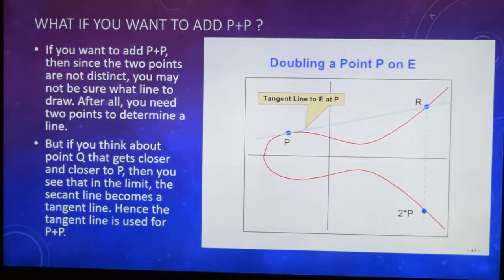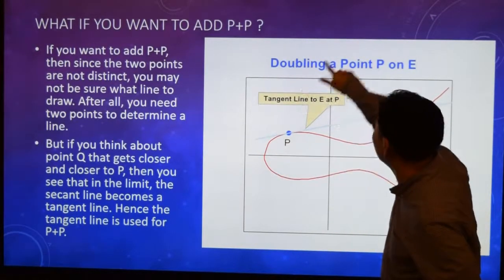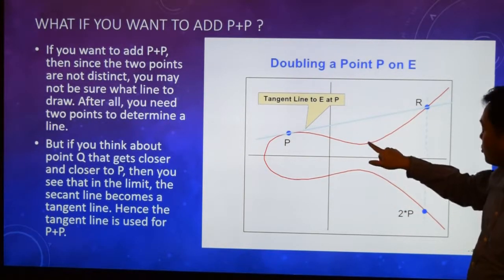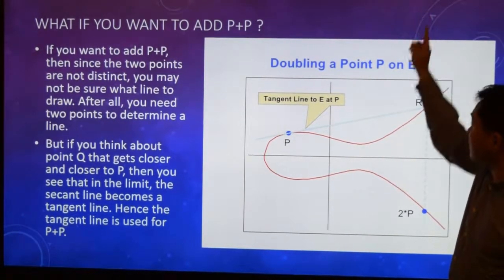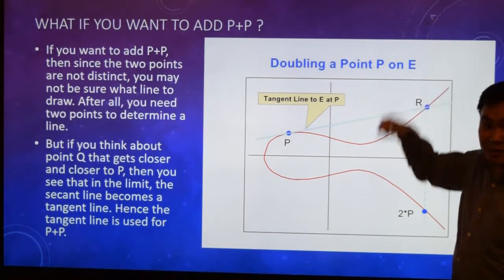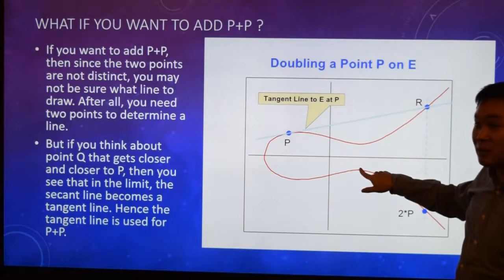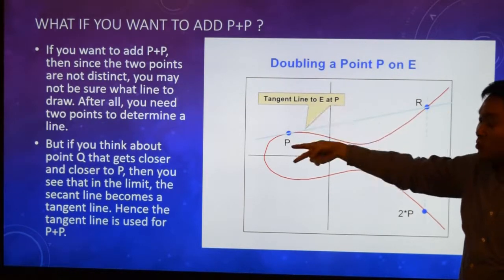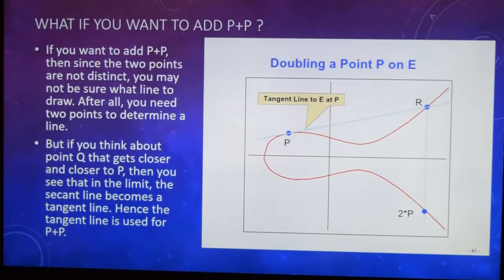If you have two points that give a vertical line, the intersection goes to the infinite point, which is identified as zero in this system. So those two points are additive inverses of each other: P plus negative P gives zero, which is the infinite point. That's how the last two abelian group properties — additive identity and inverses — are satisfied by including this infinite point.